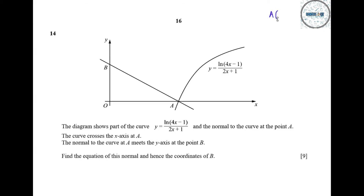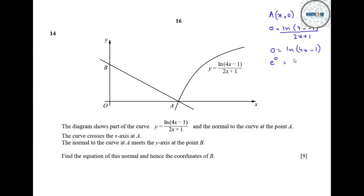Since A is on the x-axis, its coordinates are (x, 0). Substituting y equals 0 into the equation: 0 equals ln((4x minus 1)/(2x plus 1)). Cross multiplying gives 0 equals ln(4x minus 1), so e^0 equals 4x minus 1, meaning 1 equals 4x minus 1. Therefore 4x equals 2 and x equals 1/2, so A is at (1/2, 0).